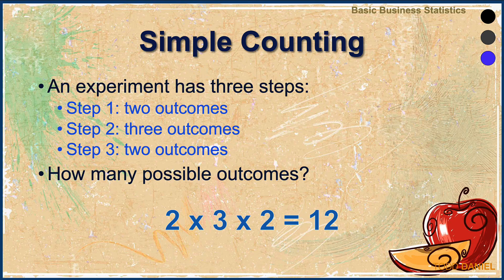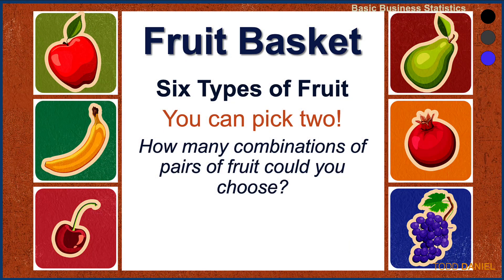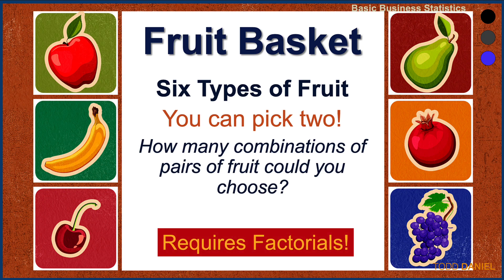But now consider this. In a fruit basket are six types of fruit, and you were told that you can pick two. You could pick the apple and the banana, the grapes and the pear, or the banana and the pomegranate. How many combinations of pairs of fruit could you choose? Doing this kind of calculation will require factorials.